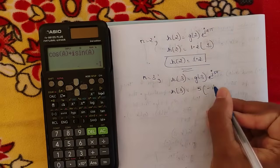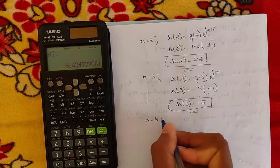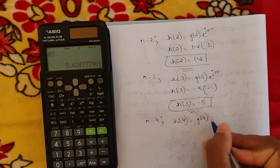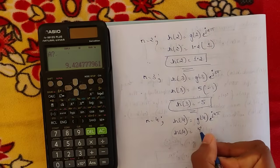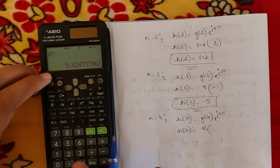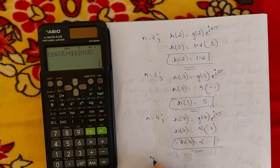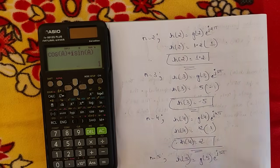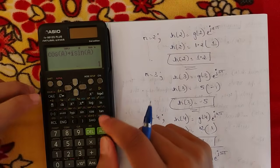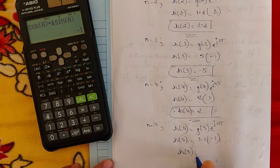For n = 4: h(4) = g(4) · e^(j·4π). With θ = 4π the value is +1, so h(4) = 2. For n = 5: h(5) = g(5) · e^(j·5π). With θ = 5π the value is −1, so h(5) = −3.3.